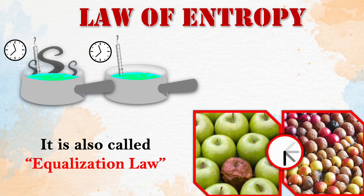Let's now look at the law of entropy, also called the equalization law. Everything in this physical world is subject to this law. If we put a pot full of hot water next to another full of cold water, entropy precipitates an exchange of heat and cold until both end up having the same temperature. And if we put a rotten fruit among a group of fresh fruits, soon all the fresh fruits end up rotting, equaling the damaged one. That is what this law does — it will always tend to equalize us to the lowest possible vibrational level. But we must know that this law fulfills a very important function: it gives us the necessary resistance so that we can develop strength.